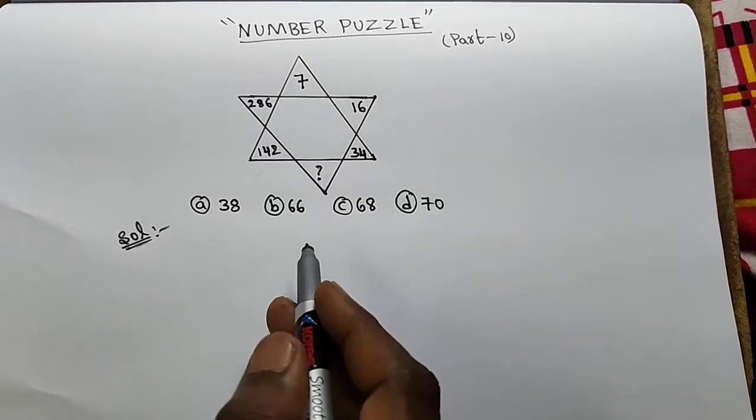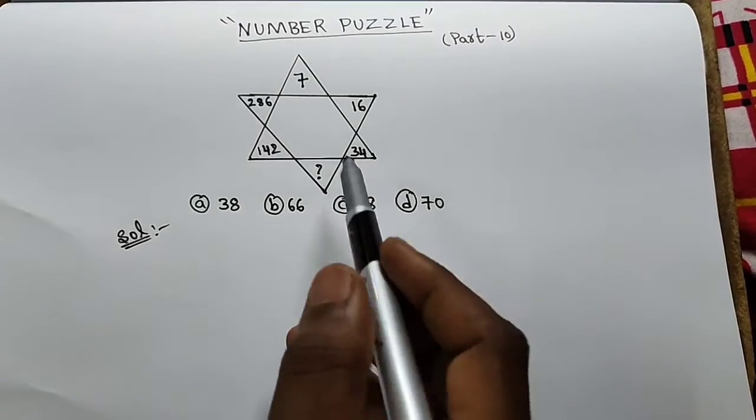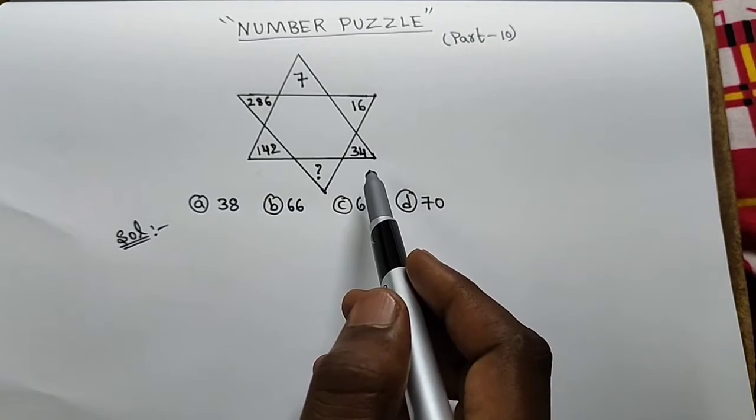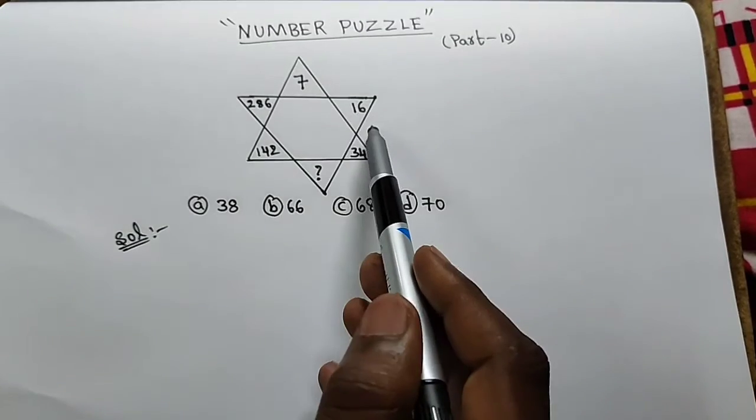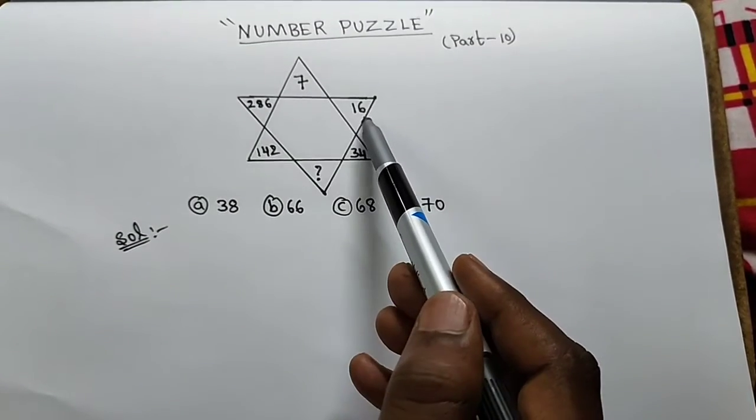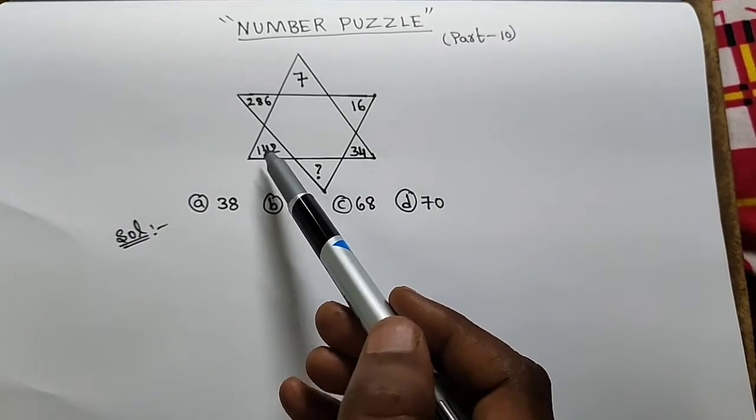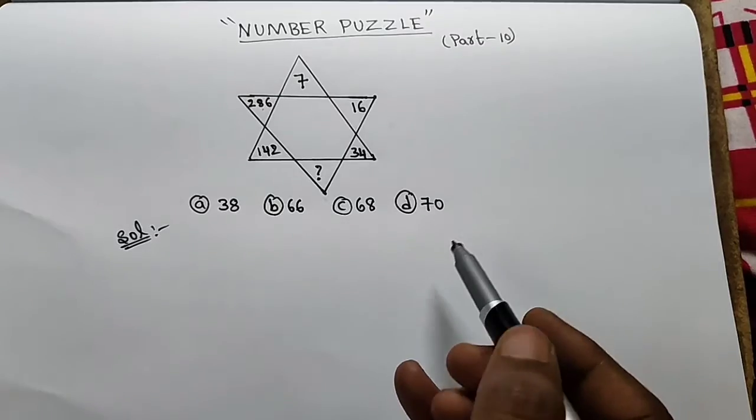Now we will do the solution. In the star diagram, we have a pattern. First: 7, 16, 34. Here we have the missing number. Then 142, 286.